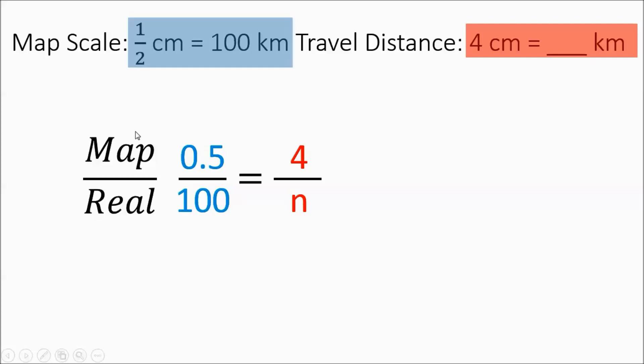Once again, you could have done reality over map. Doesn't matter as long as you keep the numbers consistent. So if you have your calculator, you could do 100 times 4 divided by 0.5. I'm going to go ahead and set up the cross product rule. 0.5n, 100 times 4. Divide out the 0.5, you're going to get 800. So in reality, hopefully you're not walking this, that would be pretty far I think. 4 centimeters is 800 kilometers. Definitely get a car.